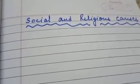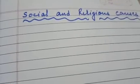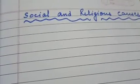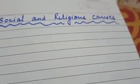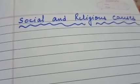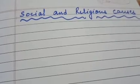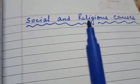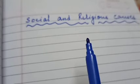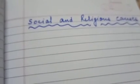Good afternoon children. In our previous class, we started the lesson: The First War of Independence of 1857. This revolt was started on 10th May 1857 at Meerut Cantonment. This revolt is also known as Sepoy Mutiny, The Uprising, First War of Independence, and many other names.